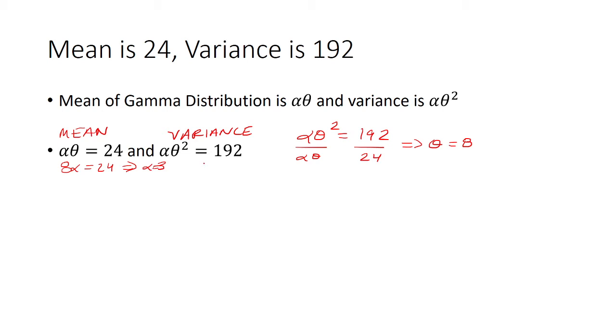You can also do a substitution. Since you know alpha theta is 24, you'll have 24, and then here it's alpha theta times theta. So you just need another theta equals 192, so then theta again is 8. Either of those two methods will work.